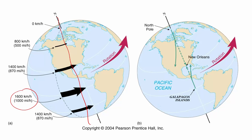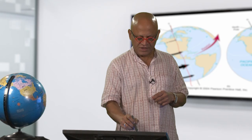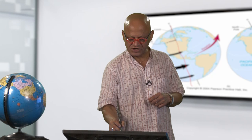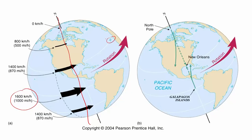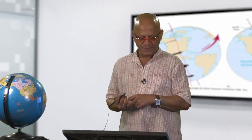On the equator everybody is moving at almost 1000 miles per hour, or 1600 kilometers per hour. As you go towards a latitude of 30 degrees north, for example, we are moving only at 870 miles per hour. And at the pole it is essentially a dot that is not moving.